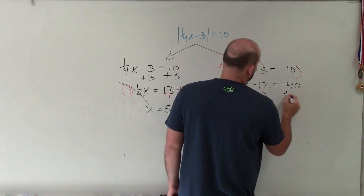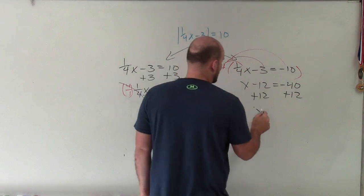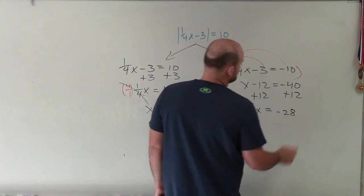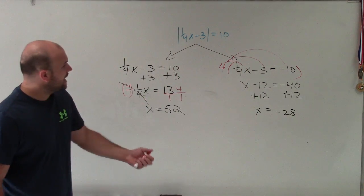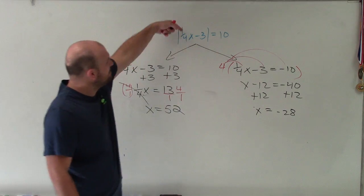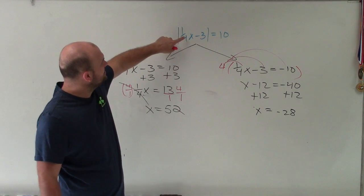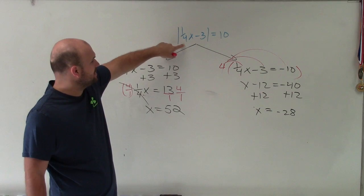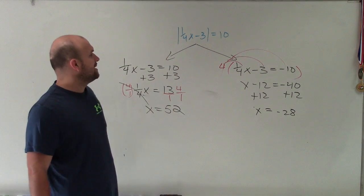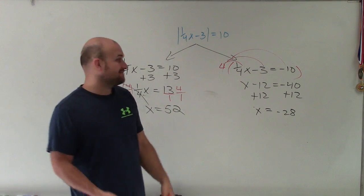Then I add 12, add 12. And I have x equals a negative 28. Now I go ahead and plug in negative 28 back into my equation. And negative 28 multiplied by 1/4 is negative 7. Minus 3 would be negative 10. Absolute value of negative 10 is positive 10.